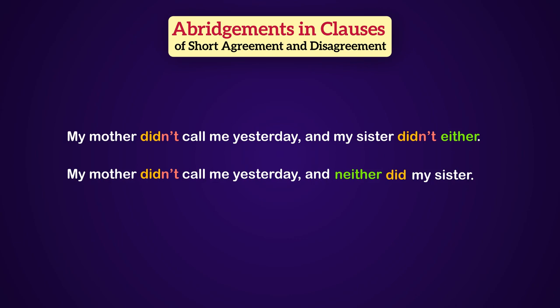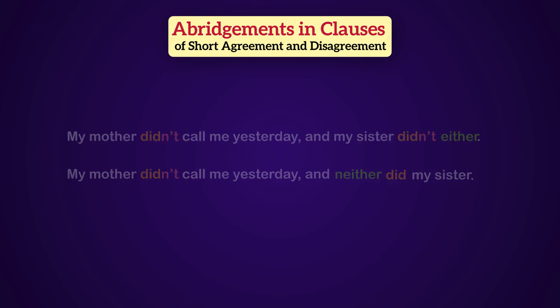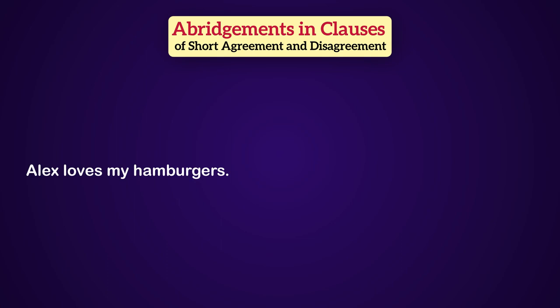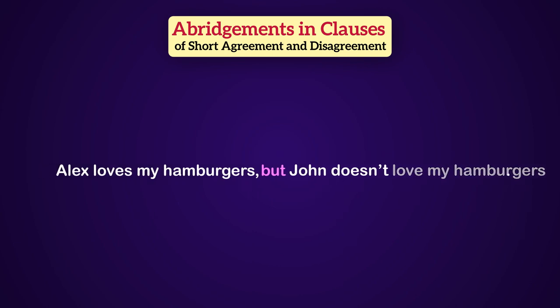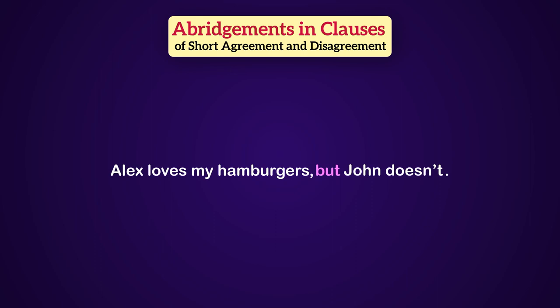What about disagreement? What if the second clause is in disagreement with the first clause? For example: Alex loves my hamburgers. John doesn't love my hamburgers. In this case, we join them with the coordinate conjunction 'but': But Alex loves my hamburgers, but John doesn't love my hamburgers. If we want to make the second clause abridged, all we have to do is keep 'does' and remove the rest of the predicate: Alex loves my hamburgers, but John doesn't.